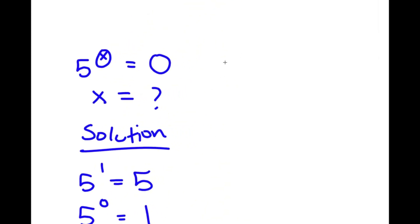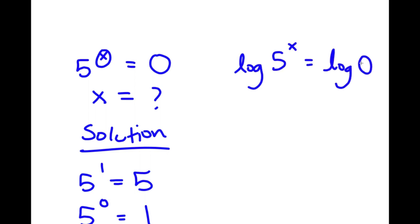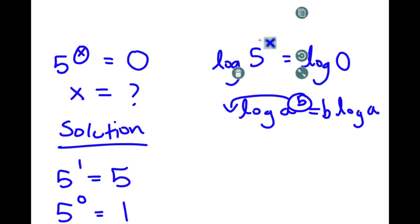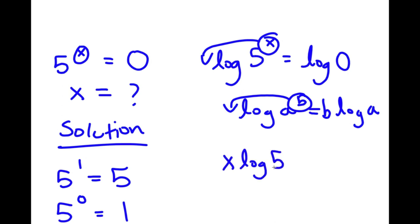The first step I'm going to do is take the log on both sides. So I have log of 5 to the power of x is equal to log of 0. Now if I have something in the form log(a) to the power of b, I can move the exponent to the front, so this is equal to b times log(a). In this case, I can move x to the front, so now I have x times log(5) is equal to log(0).